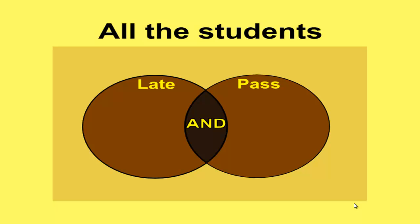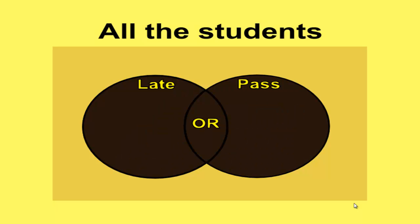What about OR? Those students who are either late or pass. Well that's going to be all of them in these shaded areas. These students will be either late or pass. Some of those who are late will obviously fail, but we're including both sets.